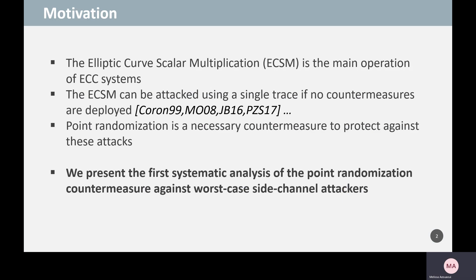As an introduction, I will describe the motivation behind this work. The main operation in elliptic curve cryptography is elliptic curve scalar multiplication, called ECSM for short. Many new attacks have been published that use only a single side-channel trace to recover the secret scalar used in the ECSM. This implies that protecting the ECSM requires strong—and maybe even a combination of—countermeasures. Point randomization is a necessary countermeasure to protect ECC implementations against DPA-like attacks that make use of the knowledge of the input point. In this work, we present the first analysis of the point randomization countermeasure against worst-case side-channel attackers.